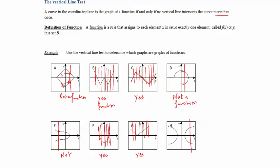For graph H, I would say it's not a function because the vertical line crosses the graph at two points — meaning one x has two y values, and therefore it is not a function. This is how we use the vertical line test to determine if a curve is a function or not from the graph. I hope this is helpful.